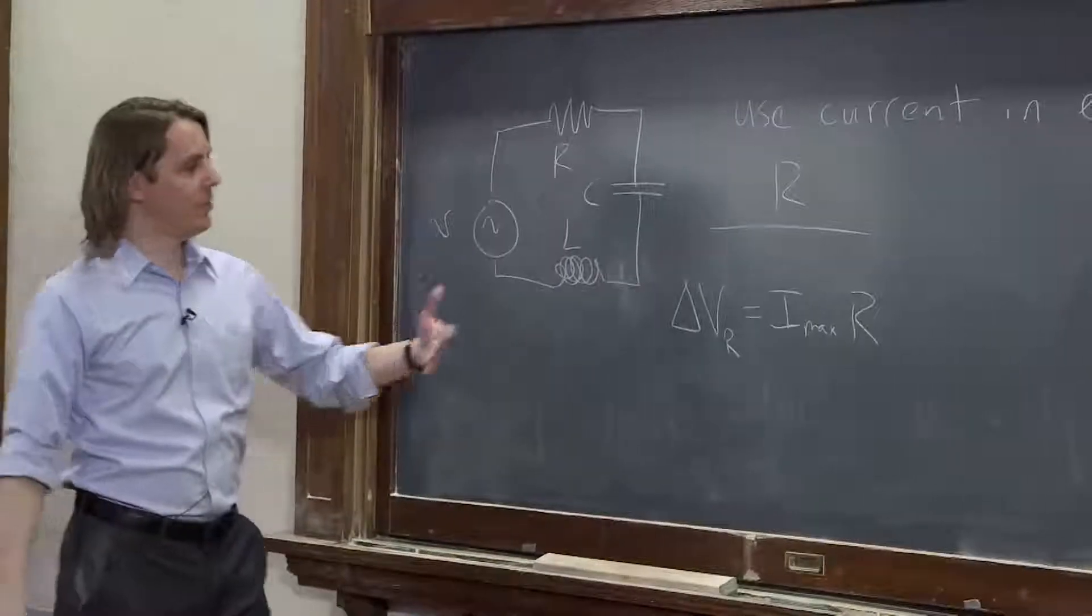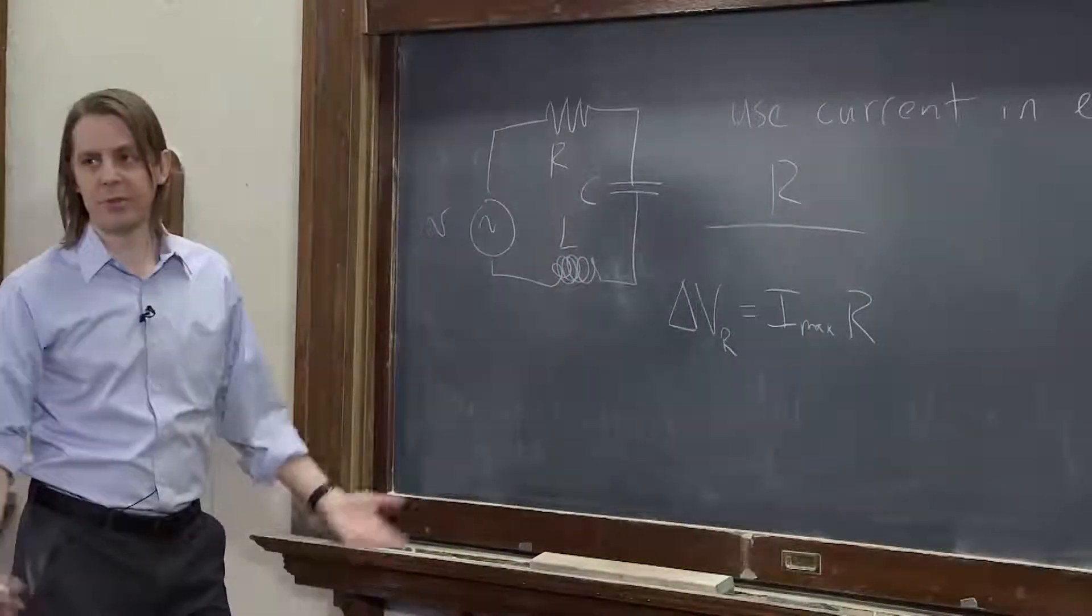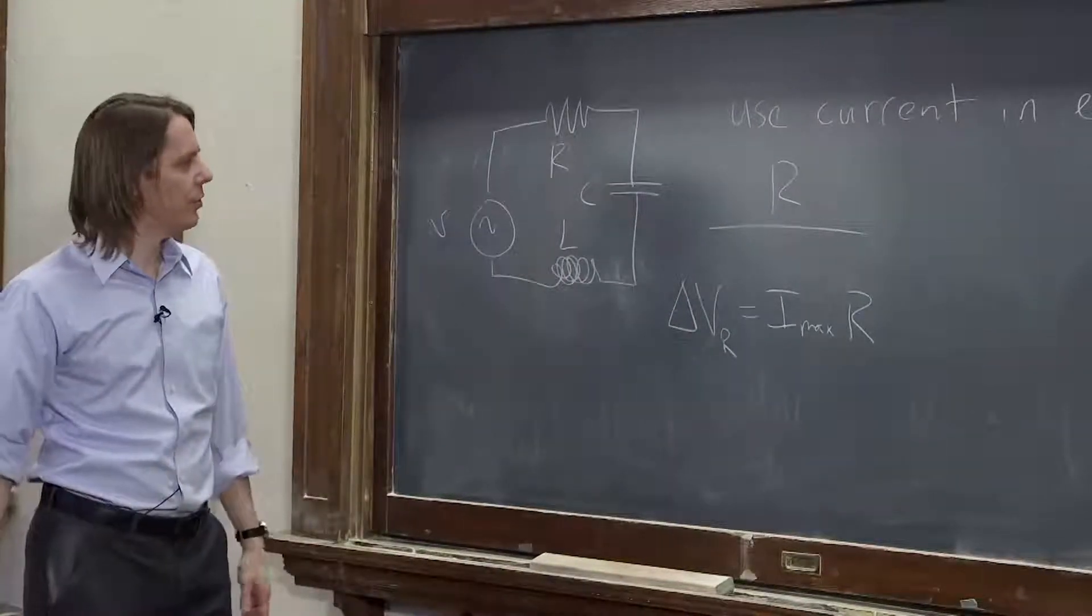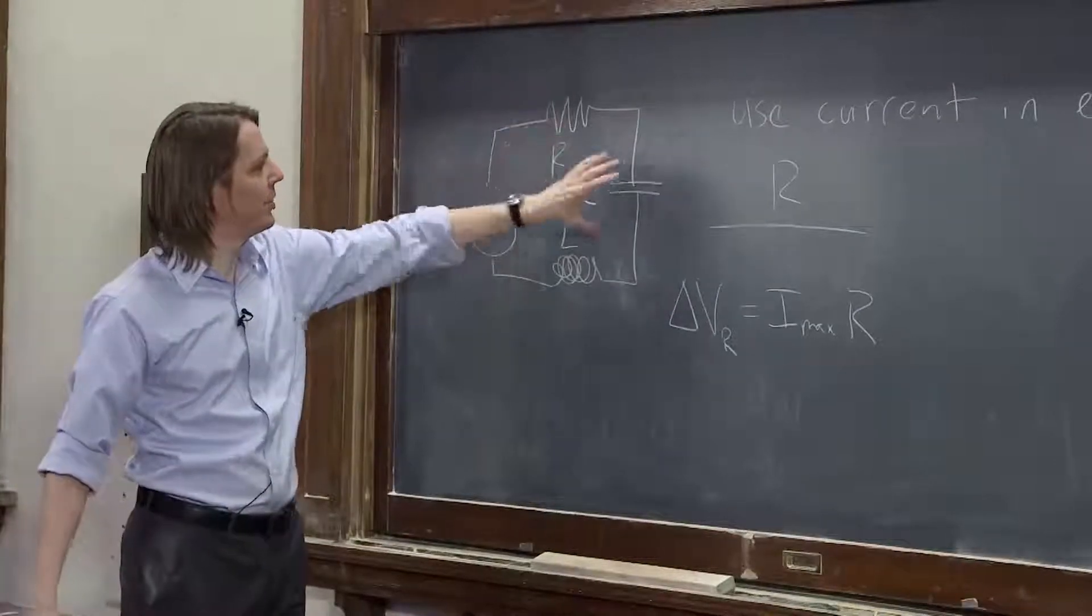So you take that formula I gave you for Imax, and you just multiply it by that one's resistance, and there's the delta V, the voltage across the resistor. Because the voltage won't be the same.